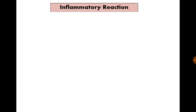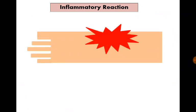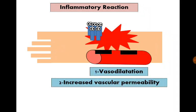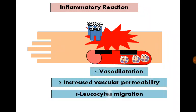The last innate immune mechanism is the inflammatory reaction. Presence of organisms at any body site triggers vasodilation with increased vascular permeability and migration of leukocytes to the site of infection. Leukocytes are attached to endothelial cells through adhesion molecules.